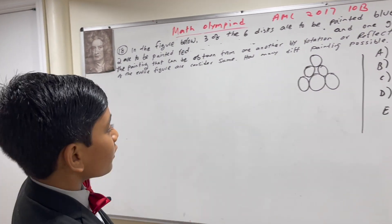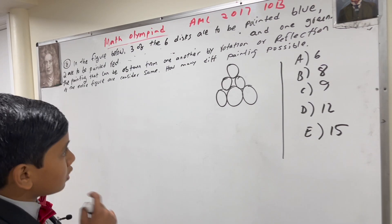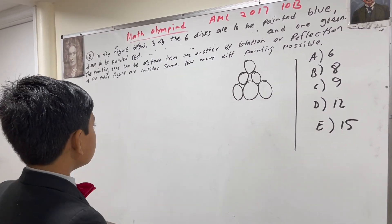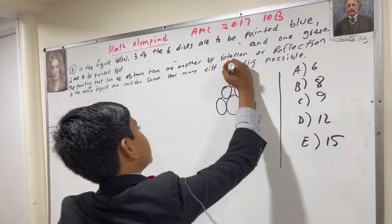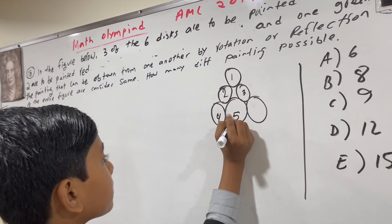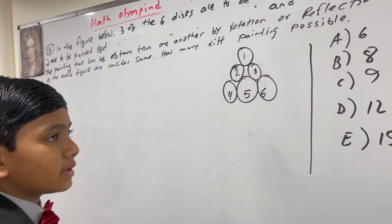Well, first, let's just consider the placement of the green discs. So, there are six possible ways this can happen. So, let's first number all of these discs, 1 through 6.